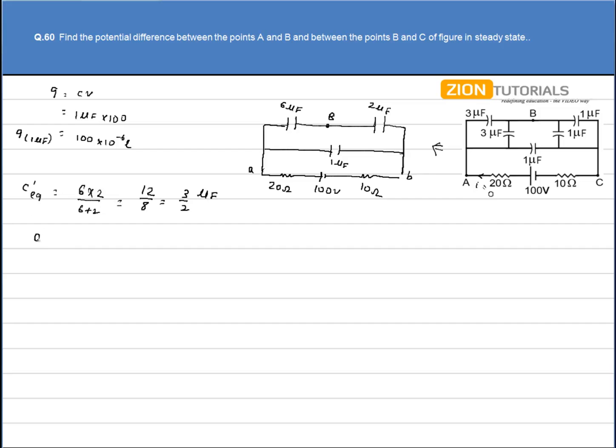So the charge on 6uF and 2uF is again calculated by formula Q is equal to CV. Net capacitance is 3 by 2 and voltage is 100. So the charge comes out to be 150uC. That is the charge on 6uF as well as on 2uF.